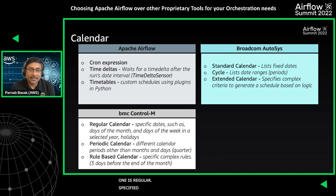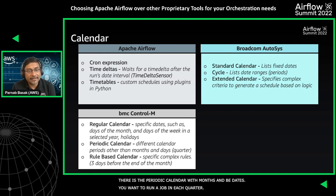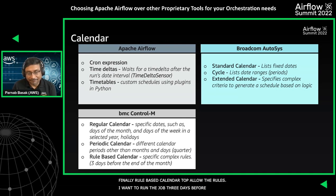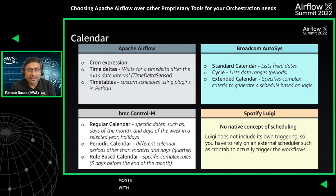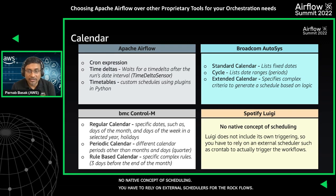BMC Control-M similarly provides three types of calendars out of the box: a Regular Calendar specifying days of the month, week, or year including holidays; a Periodic Calendar for periods other than months and days such as quarterly runs; and a Rule-Based Calendar for complex rules like running three days before the end of the month. Within Spotify's Luigi there is no native scheduling concept — you must rely on external schedulers such as crontab to trigger workflows. Both Autosys and Control-M include complex scheduling capabilities right out of the box, which you may need to custom-code in Airflow or externally in Luigi.